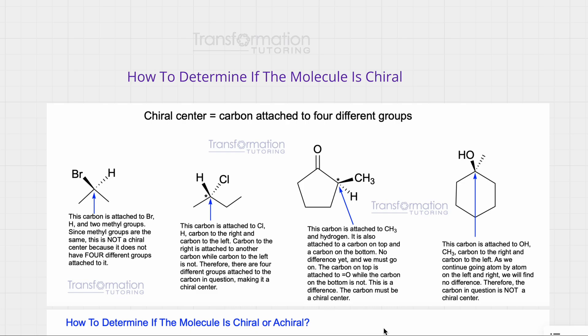Hi guys, Maya Loce here. In this video I will teach you a step-by-step way how to determine if a molecule is chiral. A chiral molecule is a molecule whose mirror image is not superimposable, but it would be really hard to imagine a mirror image and try to superimpose it in space, so instead I'm going to give you the steps to figure this out.